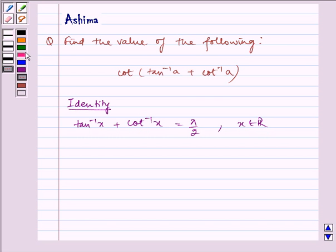Now we have cot of (tan inverse of a plus cot inverse of a), which is equal to cot of pi by 2, which is equal to 0.